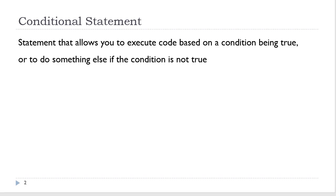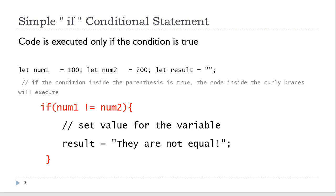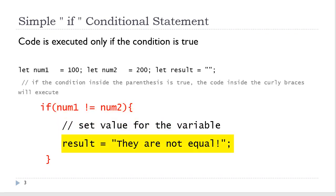A conditional statement allows you to execute code based on a condition being true, or to do something else if the condition is not true. We have already looked at a simple if conditional statement. Here we are evaluating one condition, and if that condition returns true, the code inside the curly braces will execute. If that condition does not return true, nothing will happen.